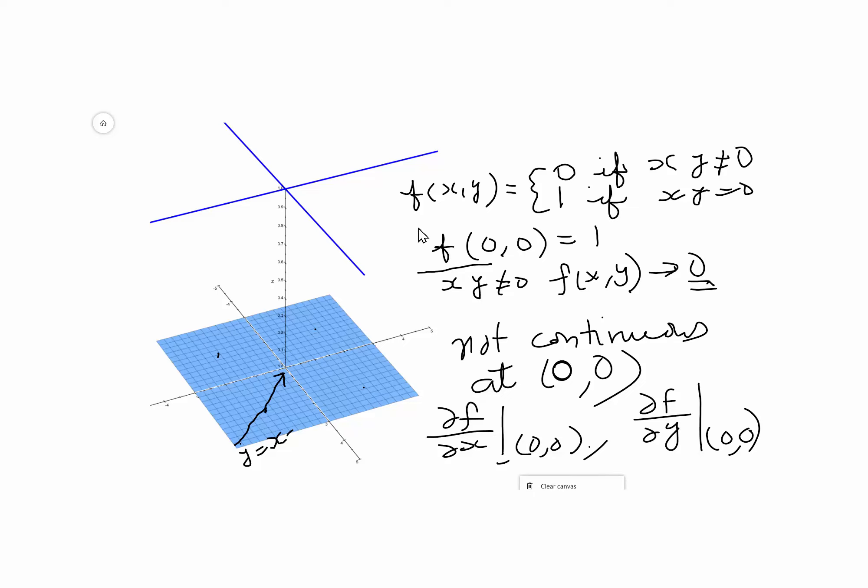Now let us see if these two values exist—that is, the partial derivative at (0, 0) with respect to x and with respect to y. Let me first make some space here. We showed that the function is not continuous at (0, 0).